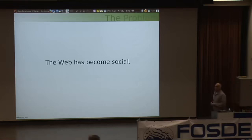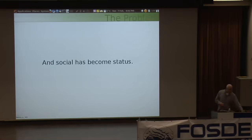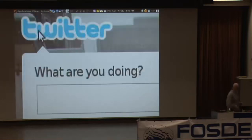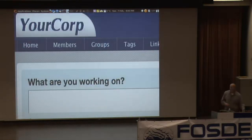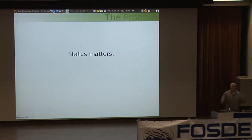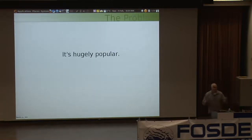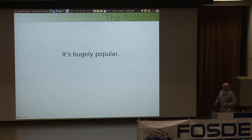The web has become social. Sociality is an important part of what people use the web for. And finally, social has become status. What do I mean by that? People are asking questions like: What are you doing? What's on your mind? What are you working on? These little boxes pop up everywhere — this is what people interact with on the web. Status matters. Status is an important part of the social web.